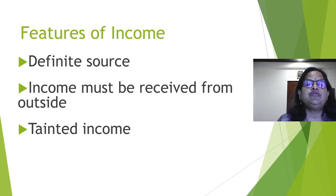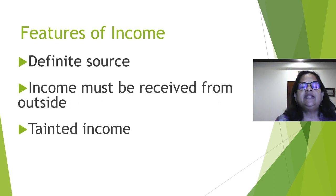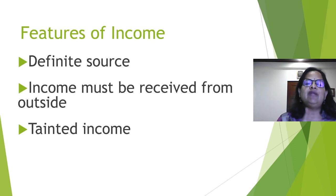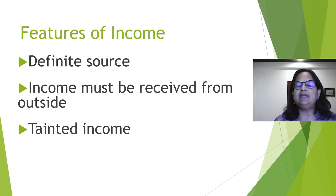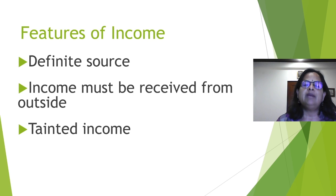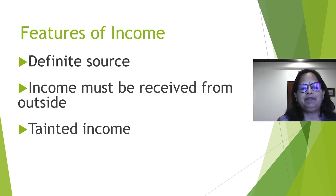Now we are coming to the features of income. Features of income: first, it is from a definite source. You are getting income from some definite source — my salary when I work for the university, royalty when I write a book, rental income from my second house property given on rent, bank interest from the bank, and dividend from companies. These are all definite sources of income.